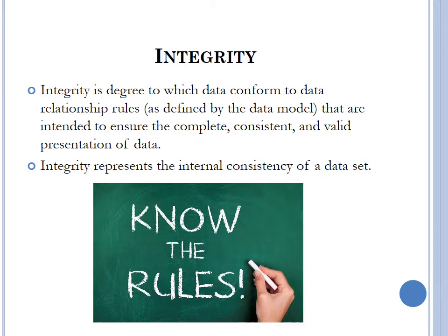Relationship rules represent the rules that govern how a business will operate — this relates to data integrity. For example, in the insurance industry, a beneficiary cannot exist unless there is a primary insured for a policy — someone must own a policy before a beneficiary can be created in a system. In banking, integrity is enforced when creating primary owners and joint owners for bank accounts — for a joint owner to be created, a primary owner must exist first.